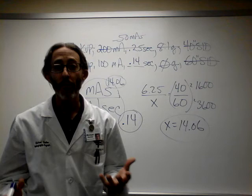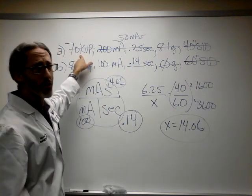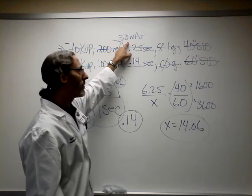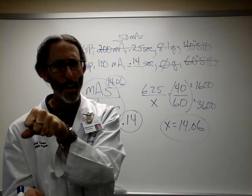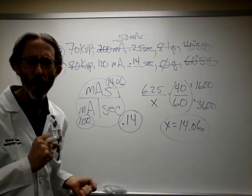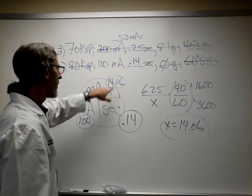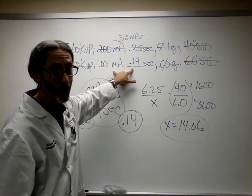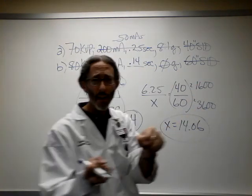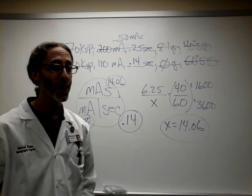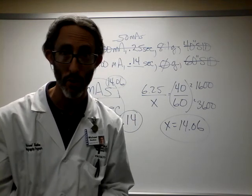What does all this mean? I'll tell you what it means, and it's an incredible thing. It basically means, if you set your KVP at 70, and you selected 50 maths, right? Used an 8-to-1 grid, and set your SID at 40, and took an exposure. Beep! Then, you put another IR in place, and started over, and changed your KVP to 80. Used 14.06 mass, which is 100 times .14 seconds. Used 14.06 mass, no grid, and moved your tube back to 60 inches. Made the exposure. Beep! Guess what? Both of those IRs would have the same density slash IR exposure. Isn't that incredible?